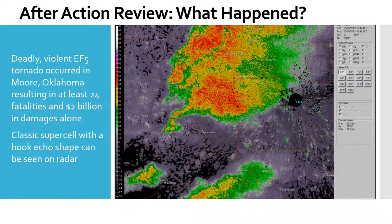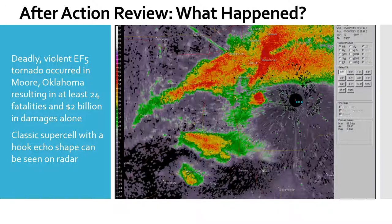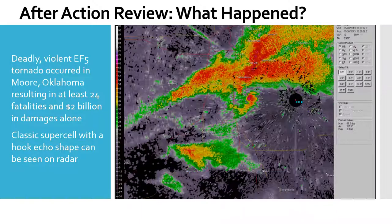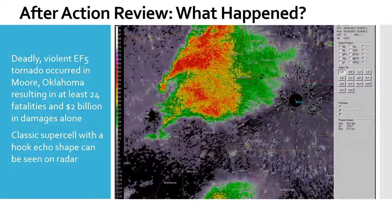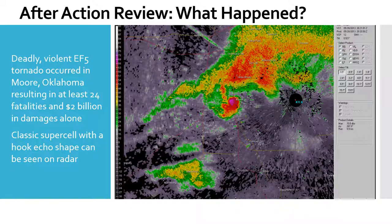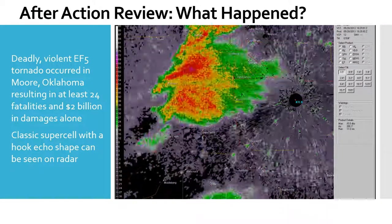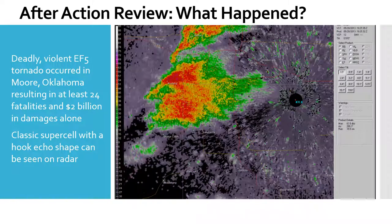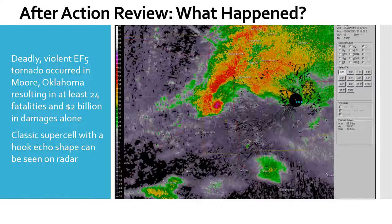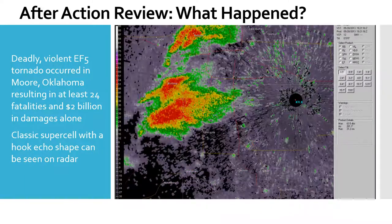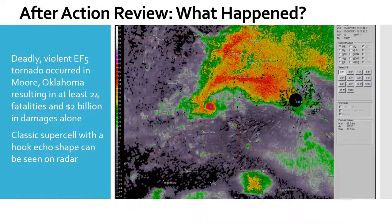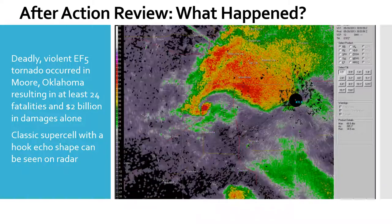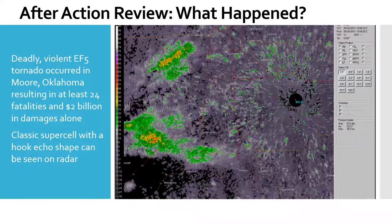Finally, we'll end by revealing that there was in fact a deadly violent EF-5 tornado which occurred on this day near Moore, Oklahoma. This radar imagery shows the tornado in action between 19 and 21Z — you can see our classic supercell discrete convection with the hook echo shape. This tornado resulted in at least 24 fatalities and more than $2 billion in damages alone, in addition to all the other severe weather which occurred that day. This shows you the gravity and seriousness of the situation — we're learning this to help keep people safe. Hopefully now that you know a little about how supercells form and the environments favorable for them, you can understand how to predict them and keep people safe. Thank you for watching and we'll see you next time.